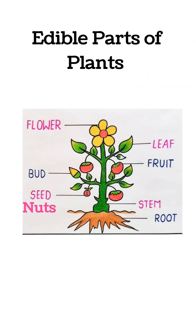Edible parts of plants. Parts of plants that we eat include roots, stem, fruits, leaf, flowers, seeds and nuts. All these we eat.